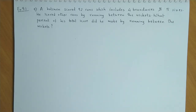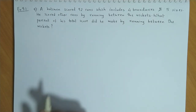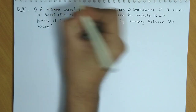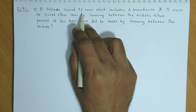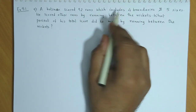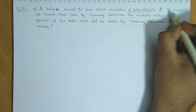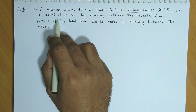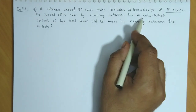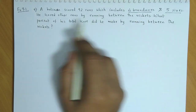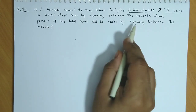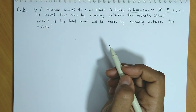Exercise 9.1, question number 9. A batsman scored 92 runs which includes 4 boundaries and 5 sixes. He scored other runs by running between the wickets. What percent of his total score did he make by running between the wickets?